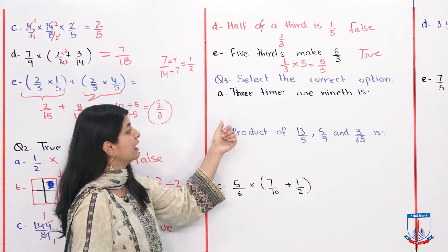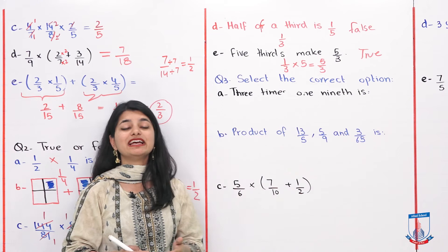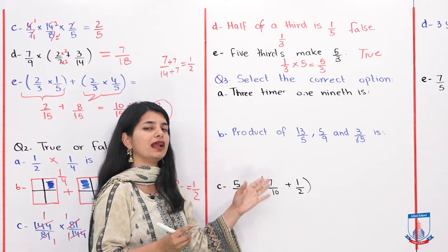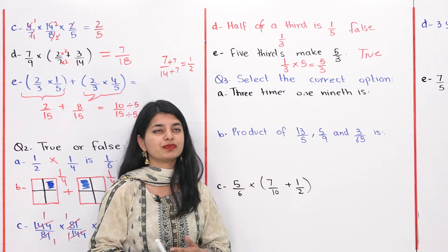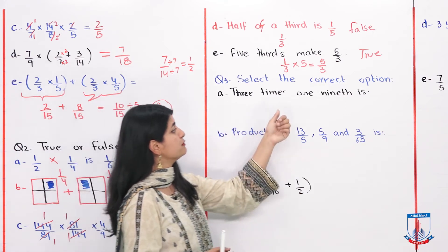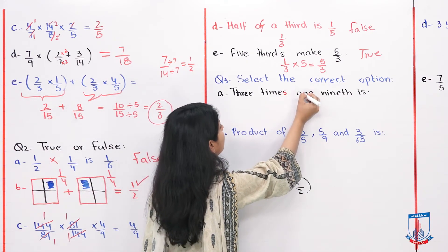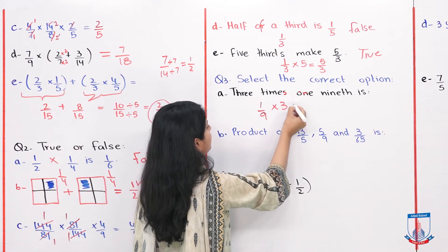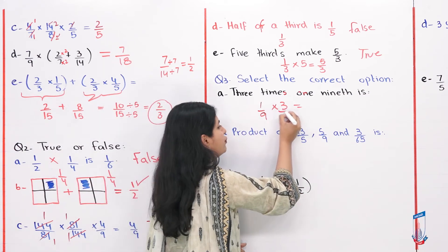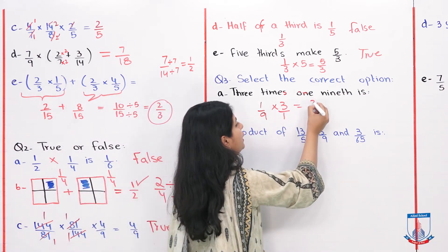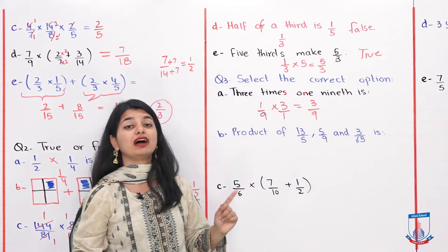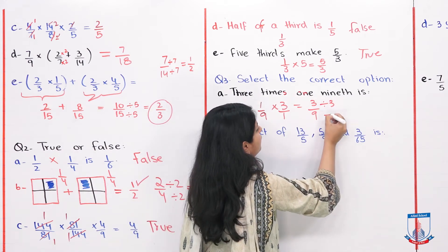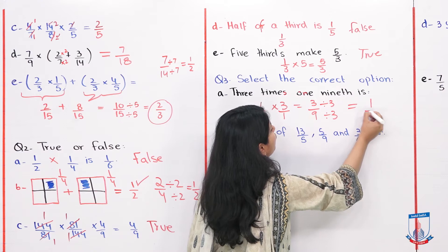Lastly, we have question 3: select the correct option. Looking at the first part, 3 times 1 ninth. So 1 over 9 into 3: 3 into 1 is 3, and 9 over 1 is 9. The answer is 3 over 9, but it can be simplified — divide both by 3 — and our answer will be 1 over 3. That is your correct option.